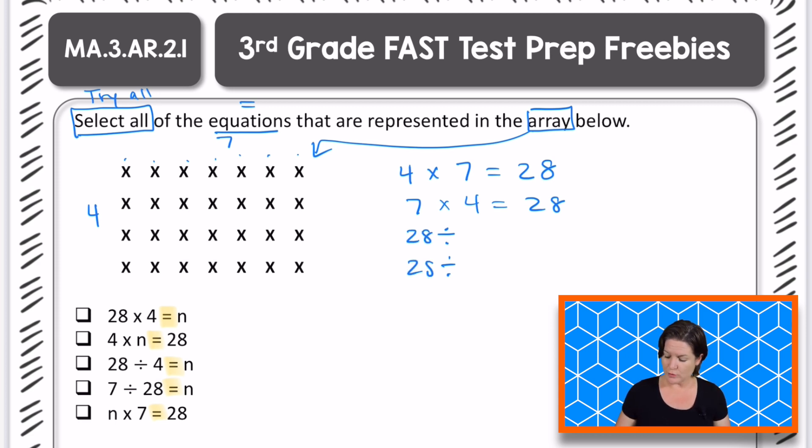28, right? So our dividend for both of these is going to be 28. Now we can make it 28 divided by four or seven, right? Let's go ahead and do four. 28 divided by four equals seven. And 28 divided by seven equals four. You got it.